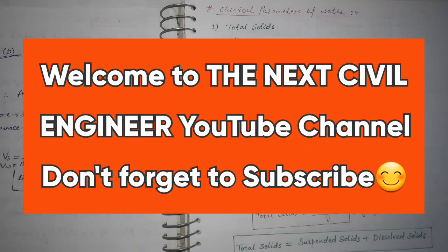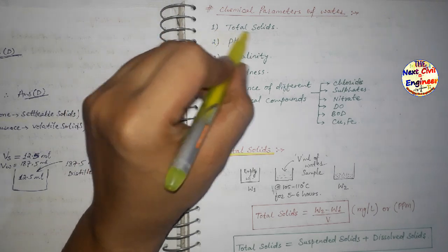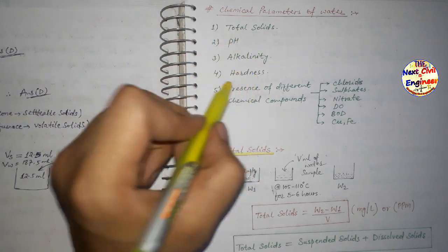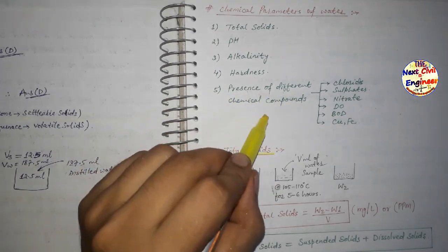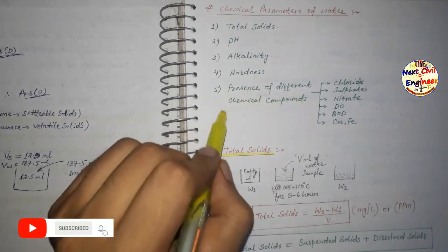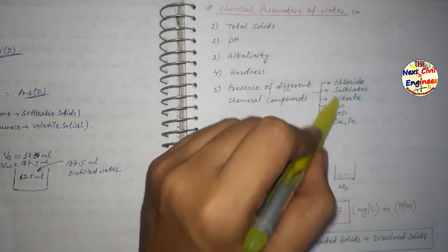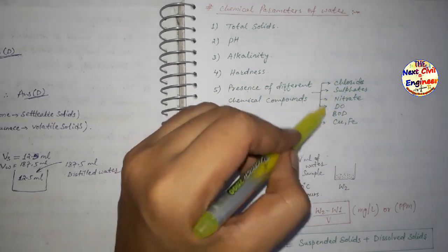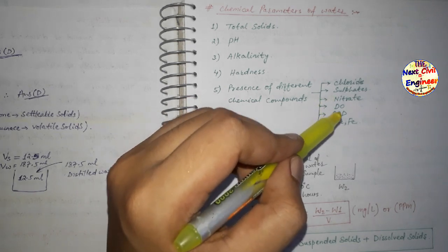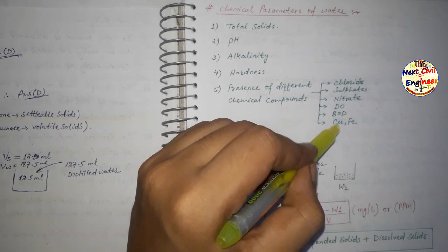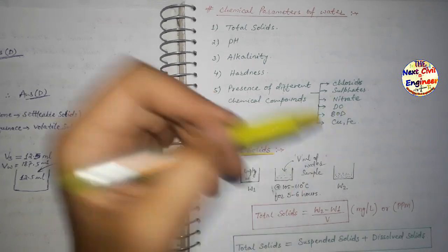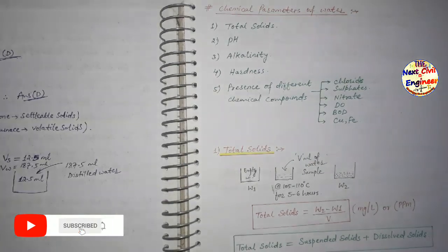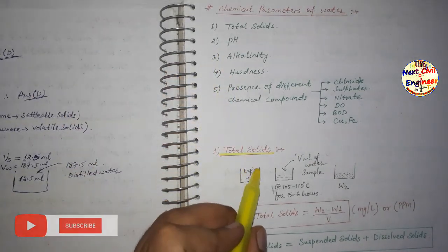Hello everyone, welcome to the Next Civil Engineer YouTube channel. Today we are going to learn chemical parameters of water. We will cover total solids, pH, alkalinity, hardness, and presence of different chemical compounds like chlorides, sulfates, nitrates, dissolved oxygen (DO), biochemical oxygen demand (BOD), and compounds of copper and iron. Let's start with the first topic: total solids.